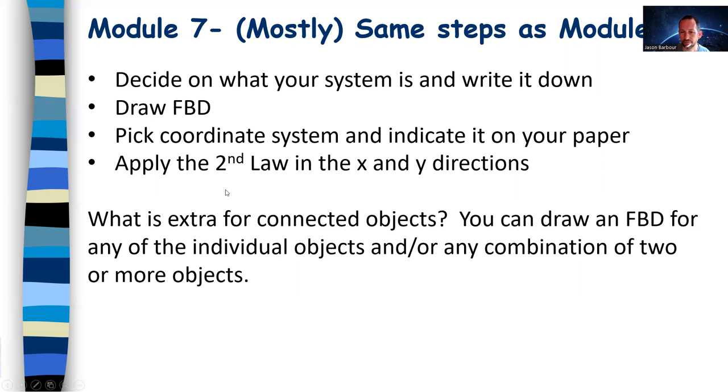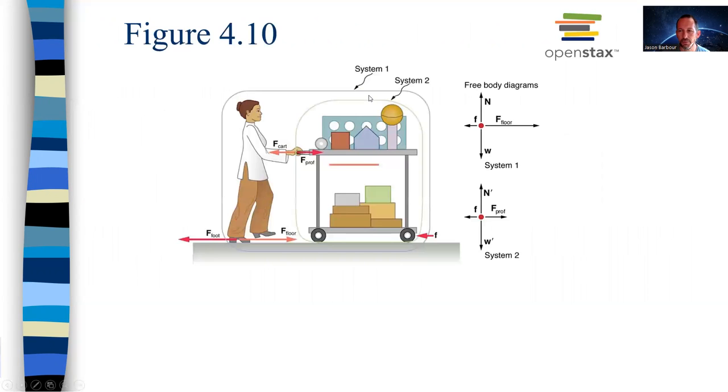So what's extra? You can draw a free-body diagram for any of the individual objects and or any combination of two or three or four objects lumped together and calling it a system. Let's just get into this and see what it looks like.